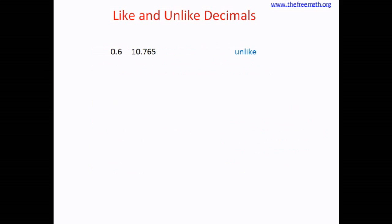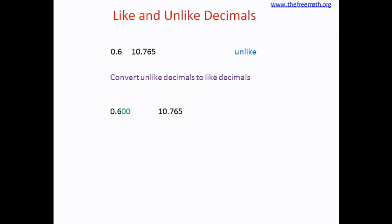Now let's consider this example of unlike decimal numbers. Can you think of converting these to like decimals? What happens if I add extra zeros at the end of the first number? After 0.6, if I write two more zeros, you can see that there are now three decimal places in both numbers. So now they can be called like decimals.